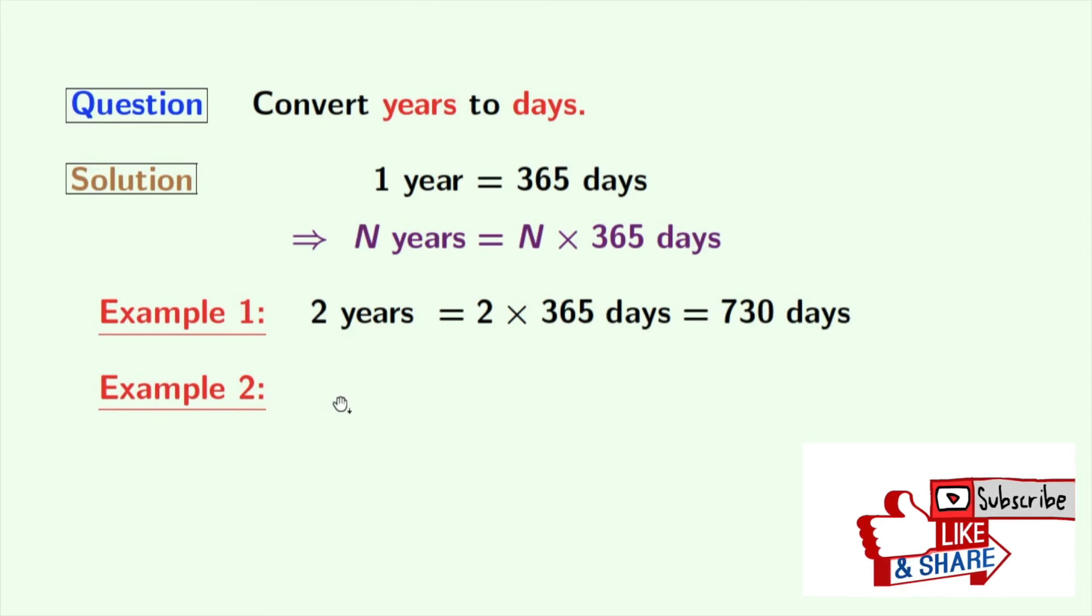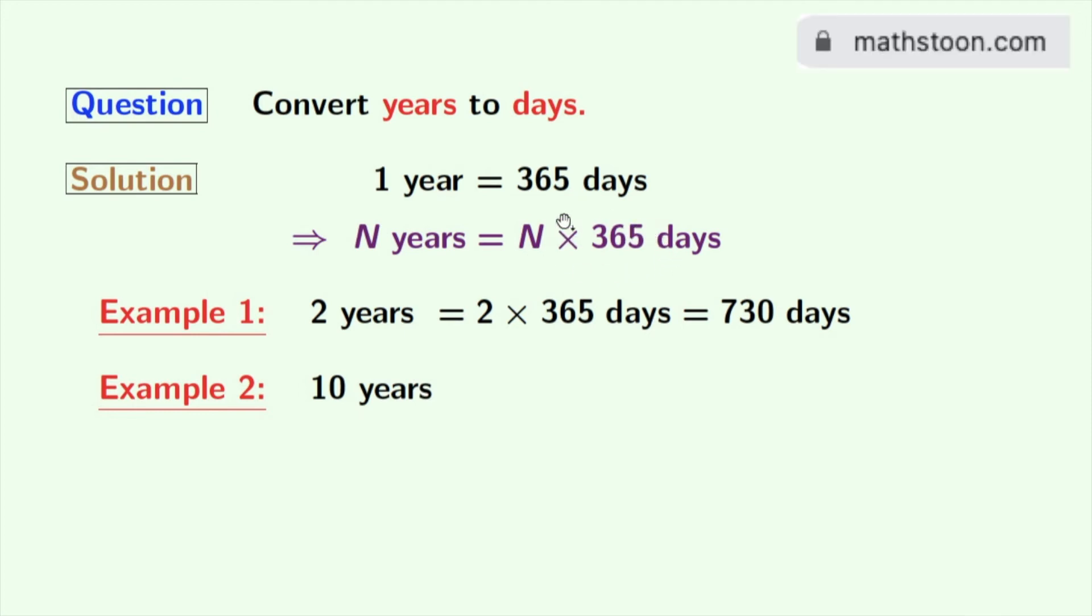Now consider another example which is 10 years. Applying this rule, we can write 10 years is equal to 10 times 365 days which is equal to 3650 days.